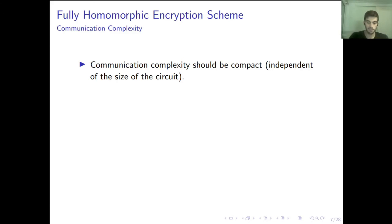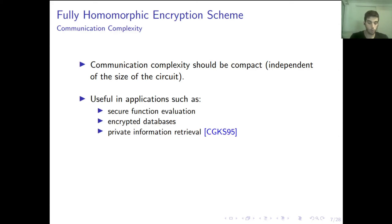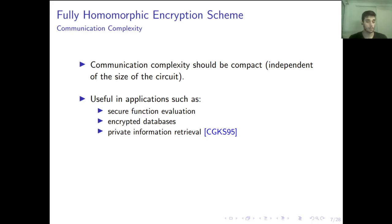If communication complexity is compact, the overhead is not too big and we can use it in applications such as secure function evaluation, or in encrypted databases such as private information retrieval, where we retrieve an item from a database without revealing which one.